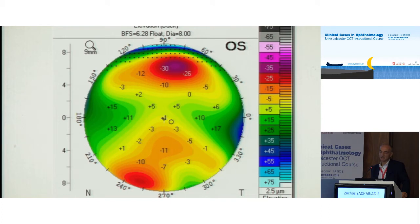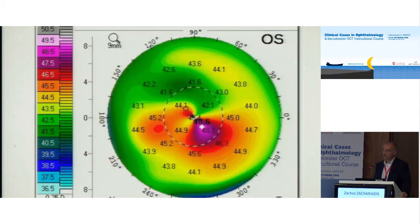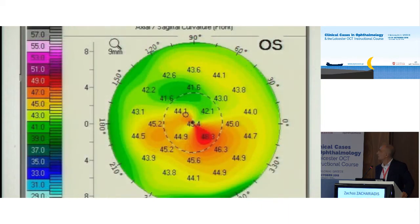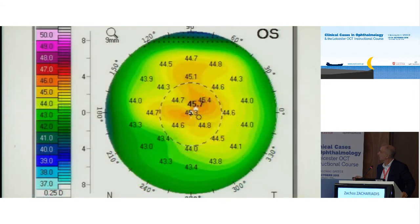We sent him home again. He came back after one month — it was better. After two months, his surface normalized. It was a contact lens overwear syndrome.